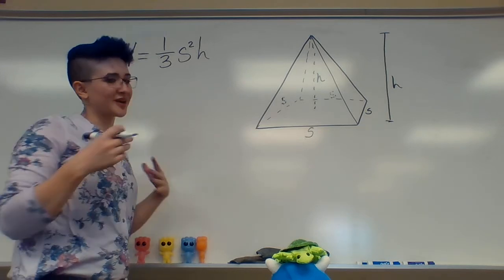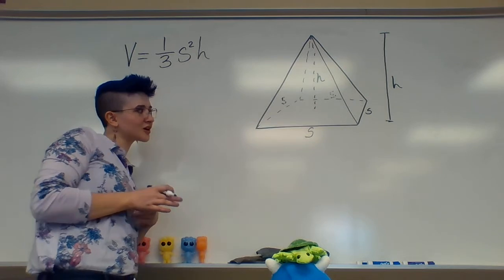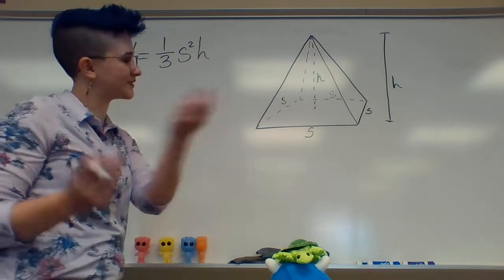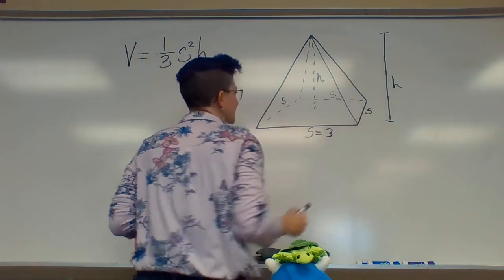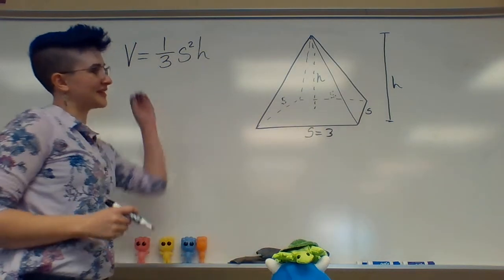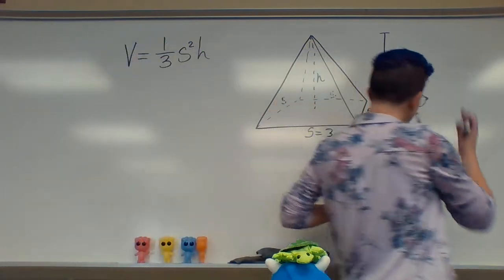So once we know our sides, once we know our height, we can just plug into the equation and start going. I'm going to say that our sides are - let's have some fun - let's say my side is three. So s equals three. That means all of my sides are three. And then height, let's say height is five. I'm just pulling numbers out of my head, that's all I'm doing.